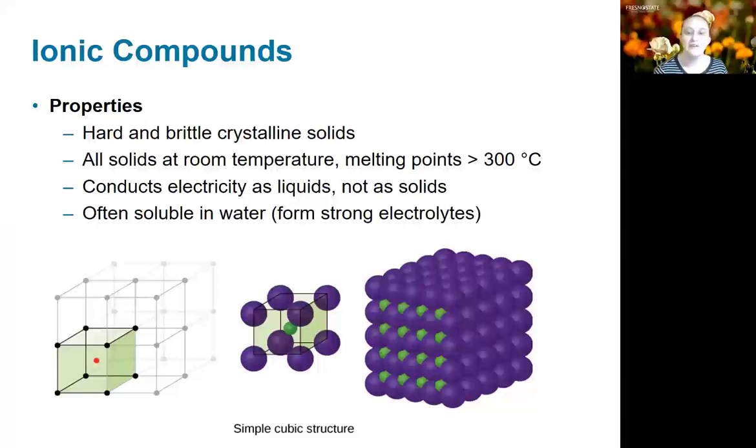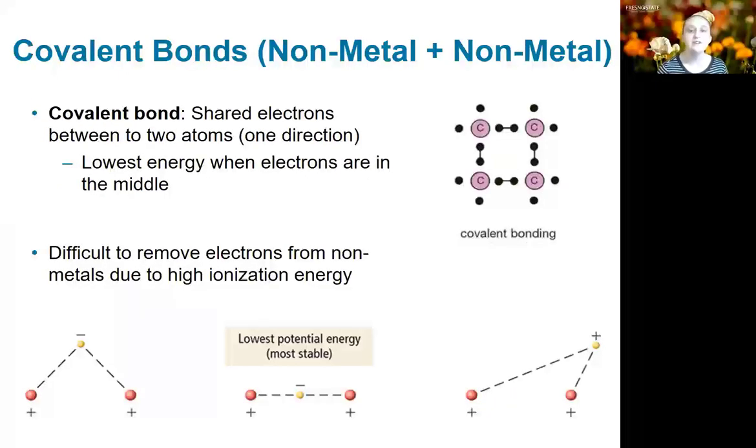Now let's talk about covalent bonds, which are generally bonds that happen between non-metals. Here, neither of the atoms is going to want to give up its electrons, so the best they can do is to share. Generally the sharing happens directly between two atoms, so it's a one-directional share. This means that covalent compounds are going to have definite structures, three-dimensional orientations besides just spheres packing together. The energy for a pair of electrons between a pair of atoms is going to be lowest when the electrons are directly in between the atoms. Basically, our most stable state is when we have the negative charge directly between the positive charges.